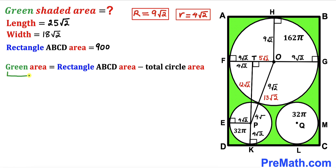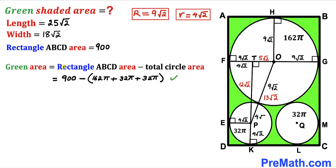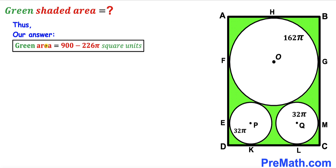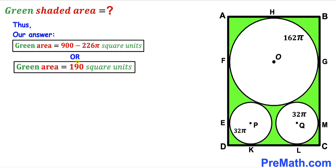Finally, the green shaded area = rectangle area − sum of all three circle areas = 900 − 226π square units, which is approximately 190 square units. Thanks for watching and please don't forget to subscribe to my channel for more exciting videos!